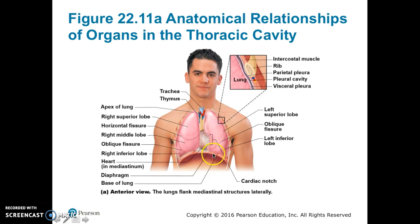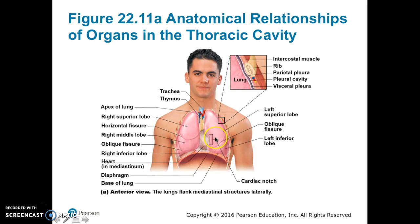The diaphragm is the inferior border, and the lungs are just superior to it. The heart lies slightly left of center, and therefore the left lung is slightly smaller and has a cardiac notch.